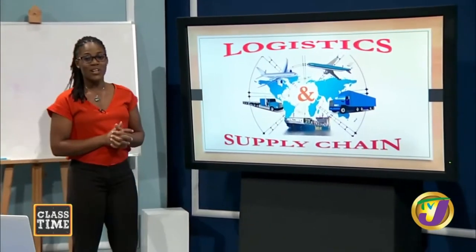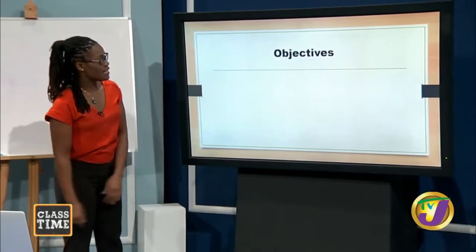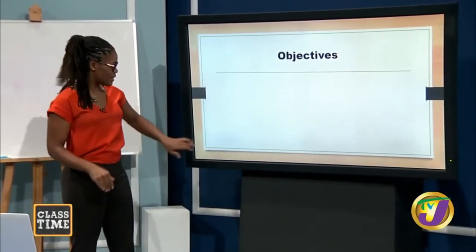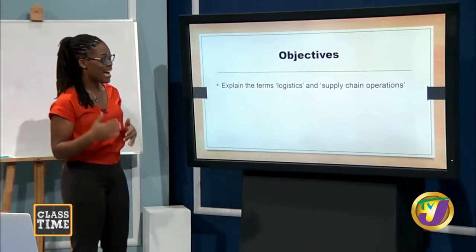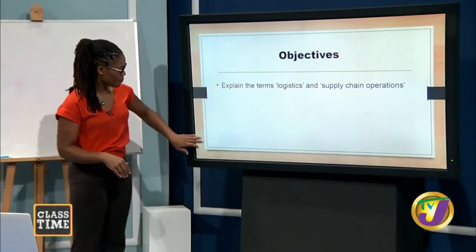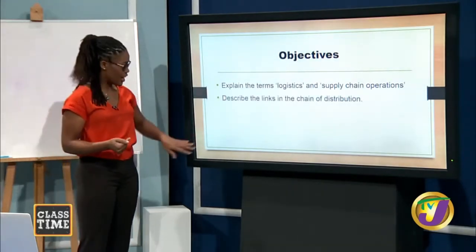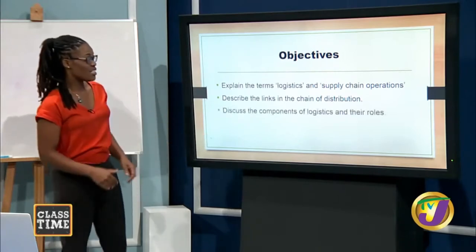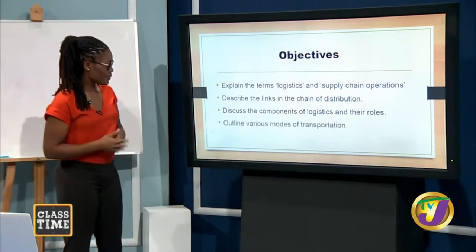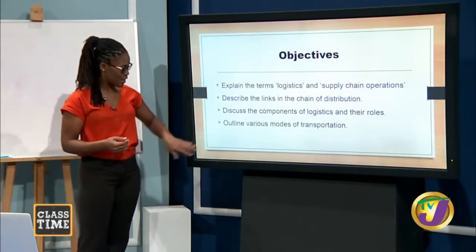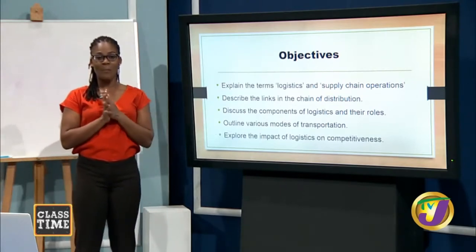Before we get into our lesson, let us examine the objectives we will be looking at today. At the end of the lesson, we hope to achieve these objectives: to explain the terms logistics and supply chain operations; to describe the links in the distribution chain; to discuss the components of logistics and their roles; to outline various modes of transportation; and to explore the impact of logistics on competitiveness.